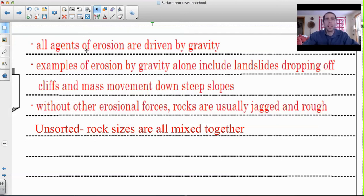An agent of erosion is something that is doing the work of carrying that material. They're all driven by gravity. Even wind is somewhat driven by gravity in terms of how the material is being picked up and dropped.